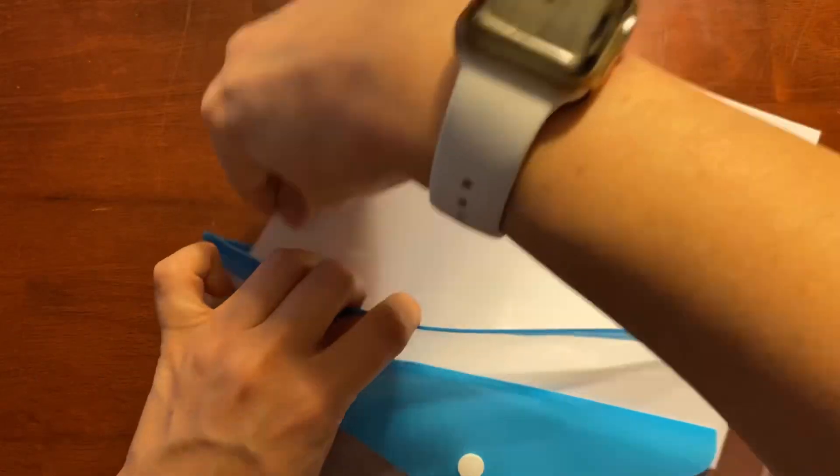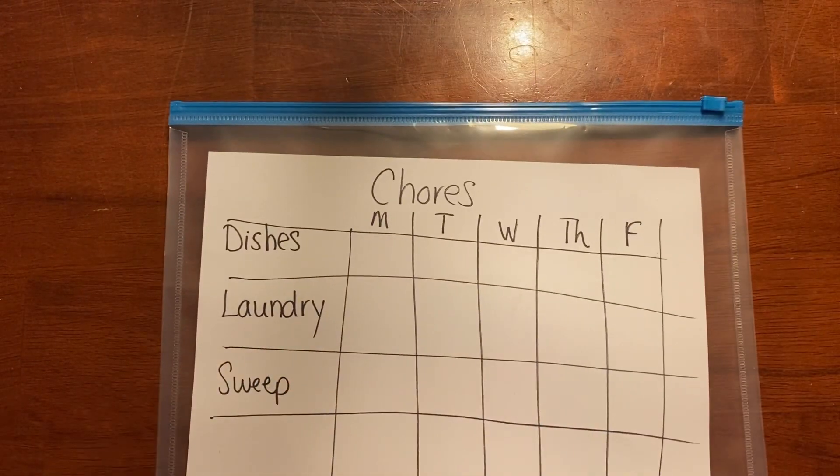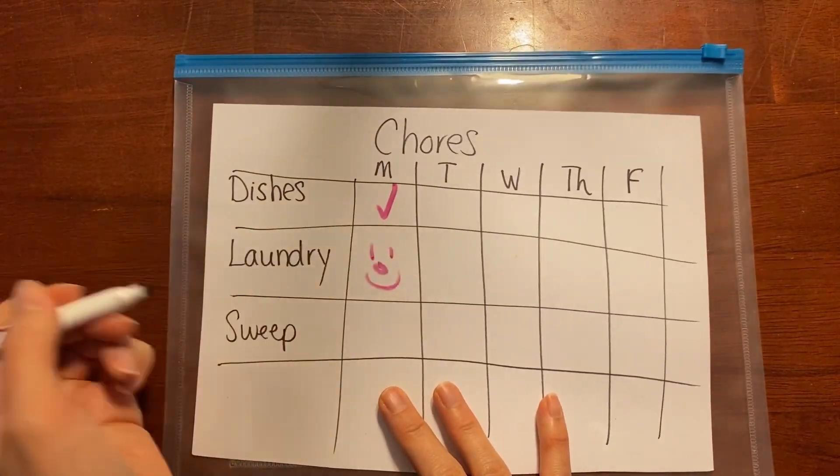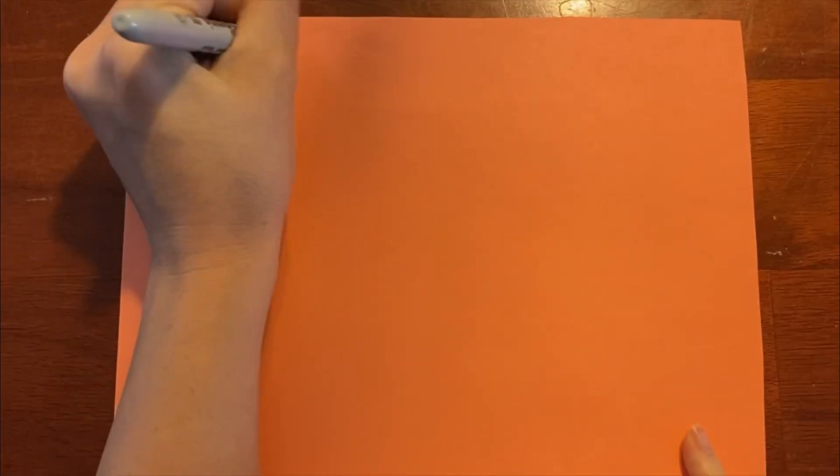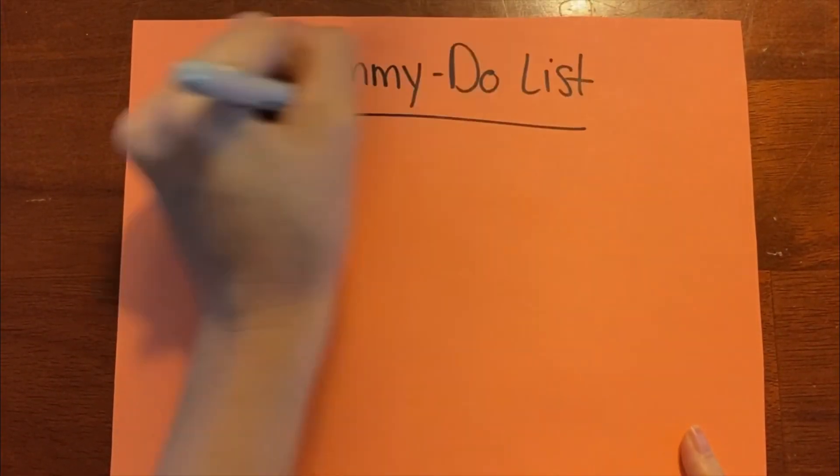Chores. They got to get it done. And I use chore charts all the time, especially for my 10-year-old. If you have a younger child, you can draw pictures instead. Check marks, smiley face, happy face, stars, whatever it is, write them little notes so they get their job done.